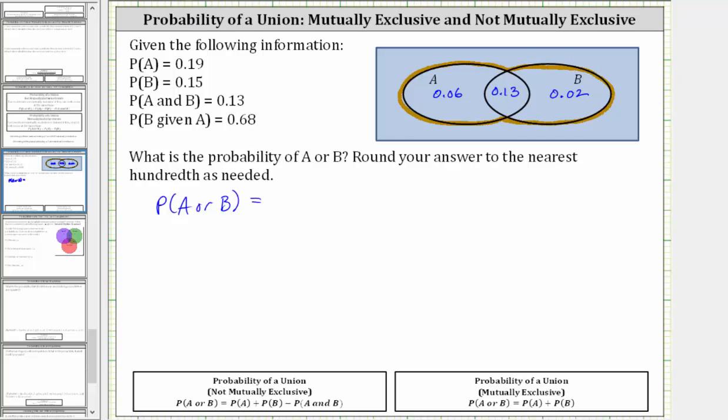The probability of A or B is equal to 0.06 plus 0.13 plus 0.02, which is equal to 0.21.